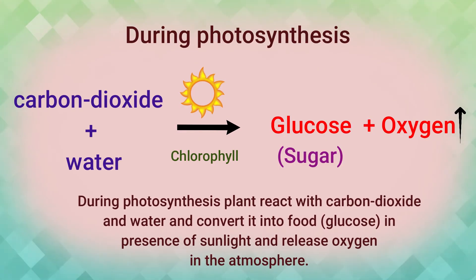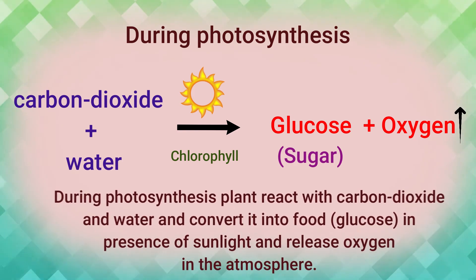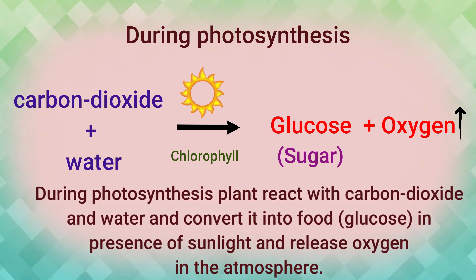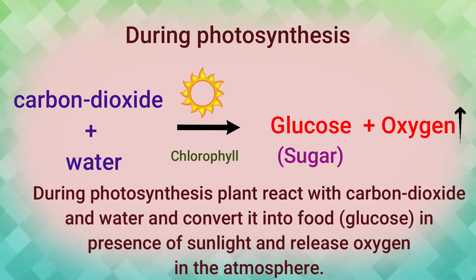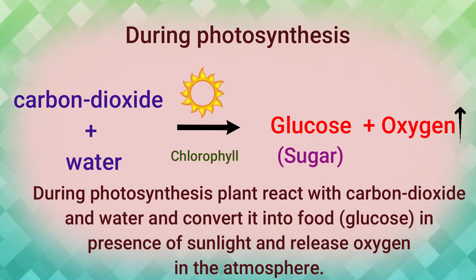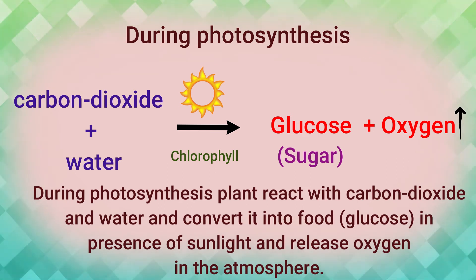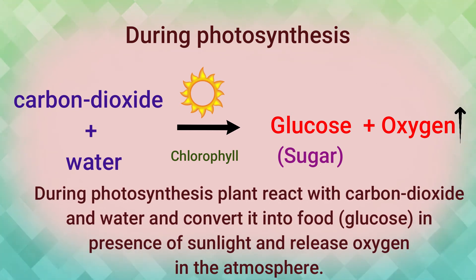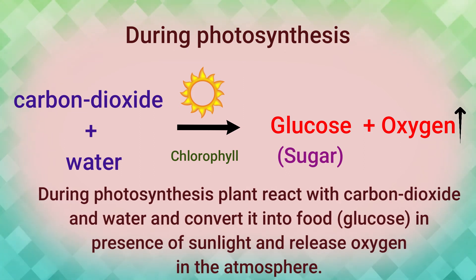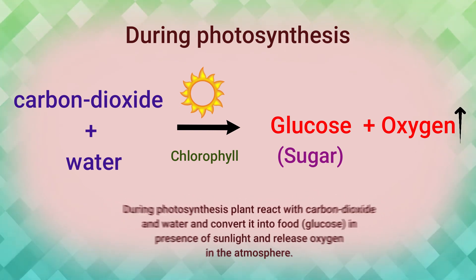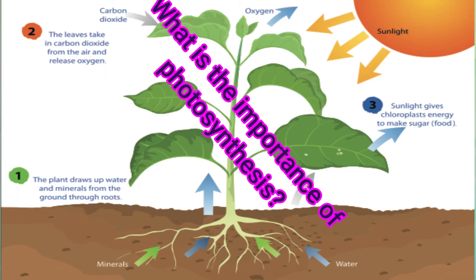During photosynthesis, plants react with carbon dioxide and water. Chlorophyll combines carbon dioxide and water to form food in the form of glucose, and it releases oxygen into the atmosphere. This process occurs in the presence of sunlight.